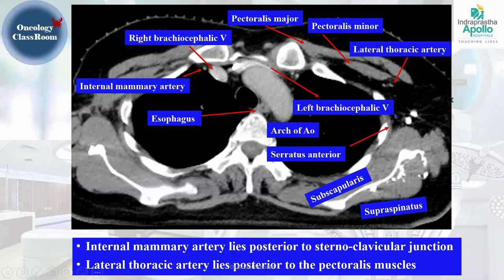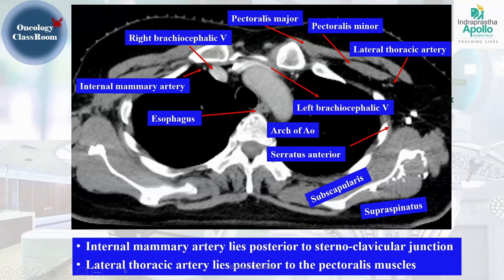The importance of the lateral thoracic artery is that it guides delineation of the breast CTV, forming its lateral-most aspect. We can also see the serratus anterior muscle and the subscapularis muscle, which lies underneath the scapular wing. The supraspinatus muscle and the latissimus dorsi muscle are also visible. Identifying the latissimus dorsi is important because the imaginary line between it and pectoralis major forms the anterior and lateral boundary for the level 1 lymph node in axillary radiation. The lateral thoracic artery lies posterior to the pectoralis muscle.